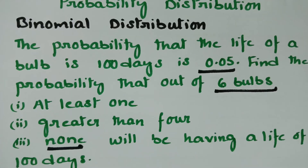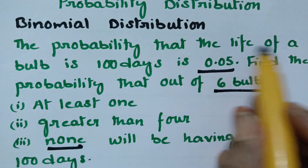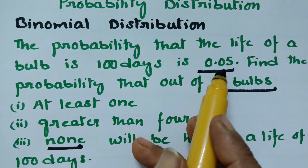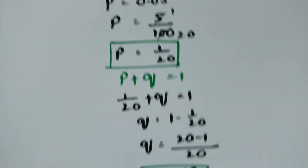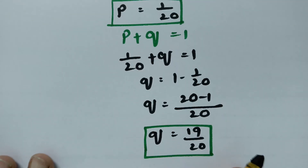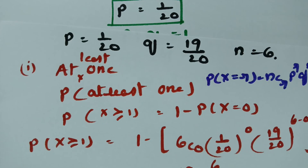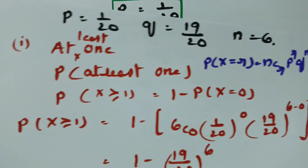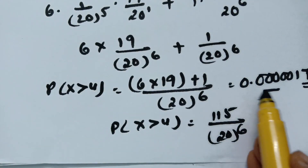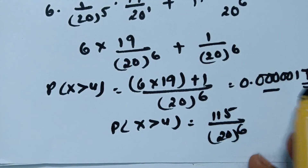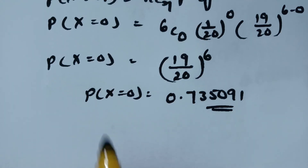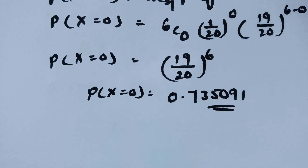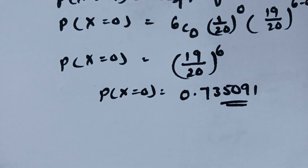To summarize: P = 1/20, Q = 19/20, N = 6. The probability that at least one bulb is having a life of 100 days is 0.2649. For greater than 4, the probability is 0.00001796. The probability that none of the bulbs is having a life of 100 days is 0.735091. Thank you so much for watching.